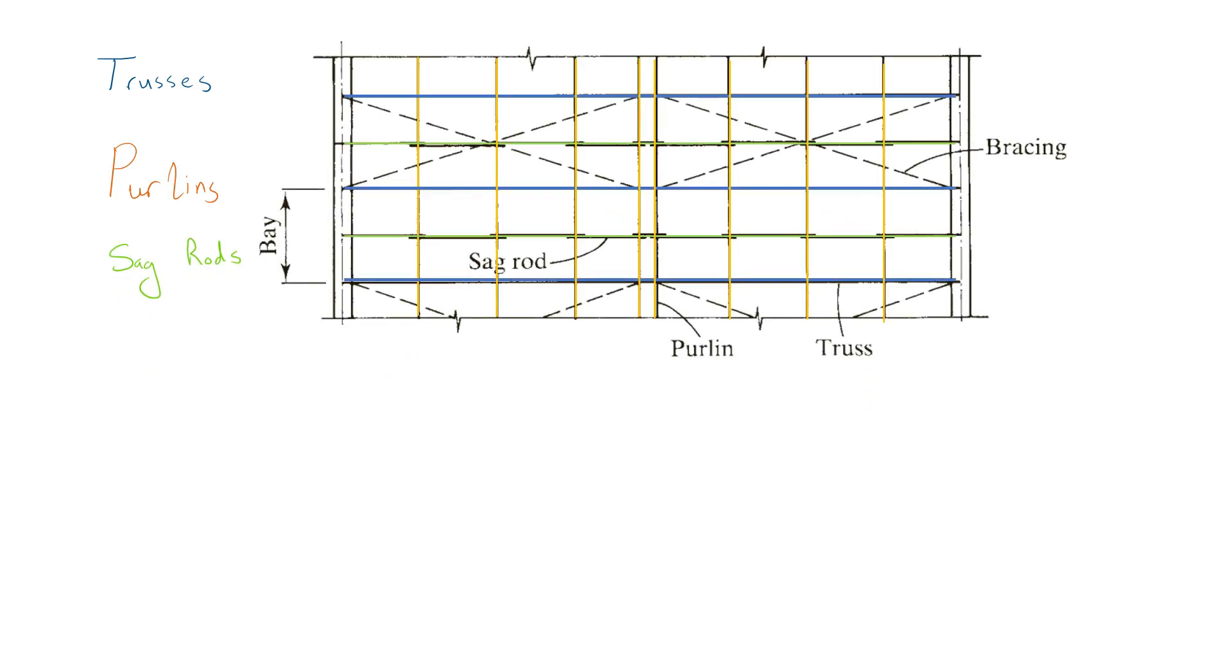Most of the loads applied to the purlins are vertical, so there will be a component parallel to a sloping roof which will cause the purlin to bend or sag in that direction. Sag rods can be located at the midpoint, the third points, or at more frequent intervals along the purlins depending on the amount of support needed.